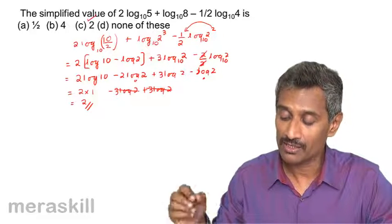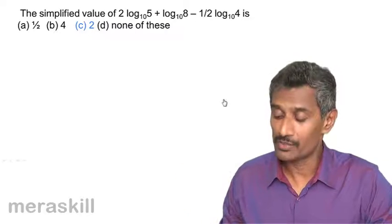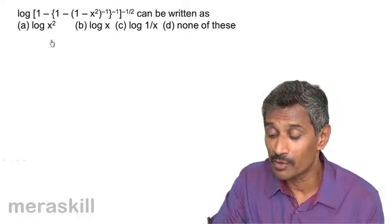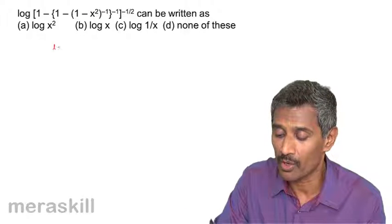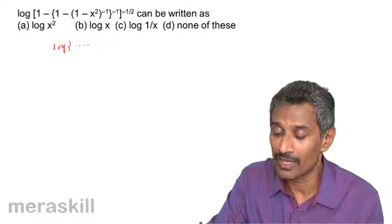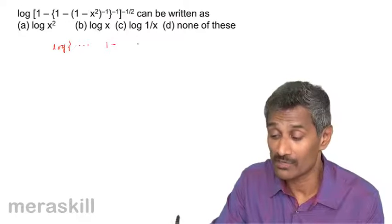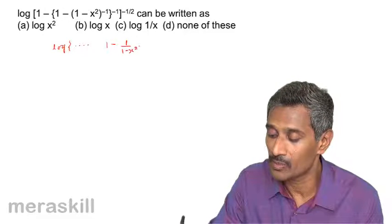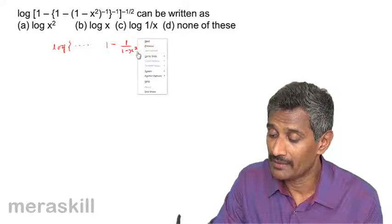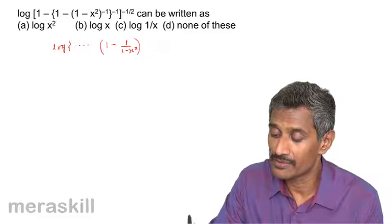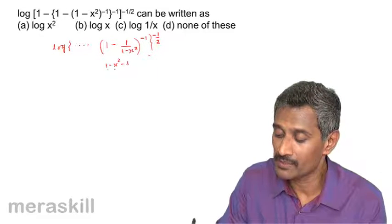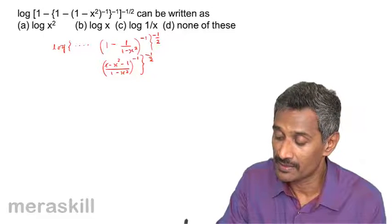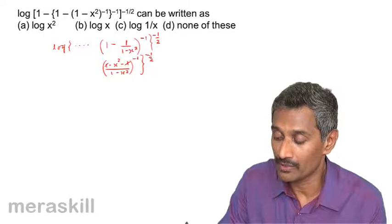Now we have something more complex. We start with the smallest bracket: 1 minus (1 minus x squared) raised to minus 1, which equals 1 upon (1 minus x squared). The whole thing is raised to minus 1. Working through: minus x squared upon (1 minus x squared), the whole raised to minus 1, the whole raised to minus half.